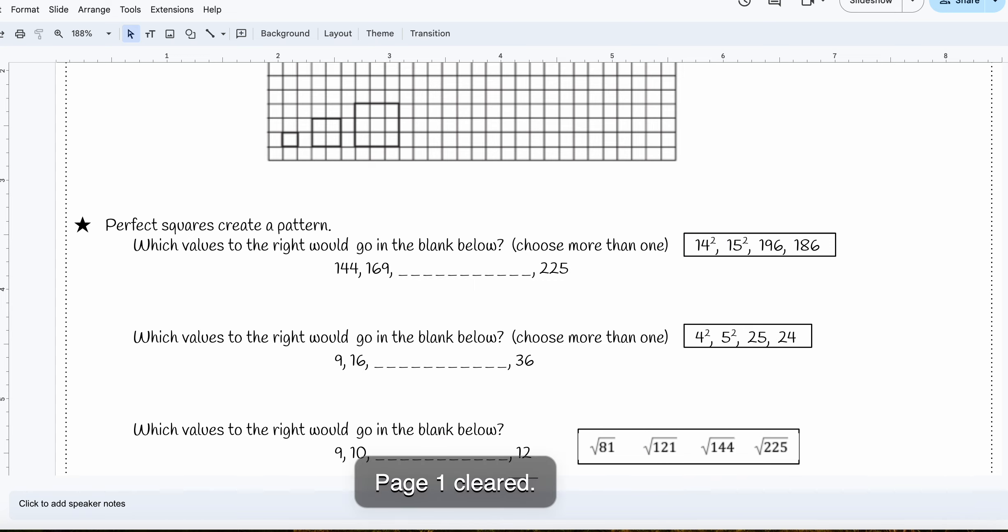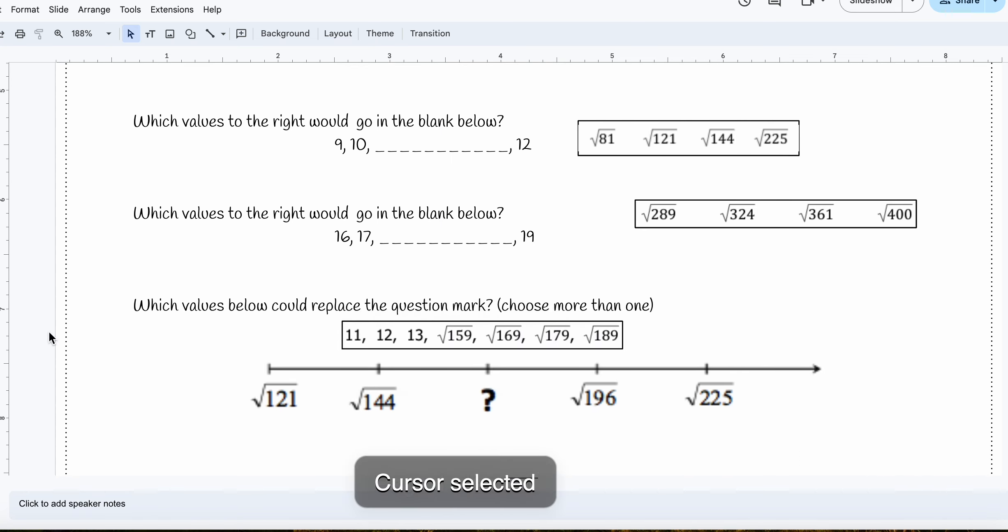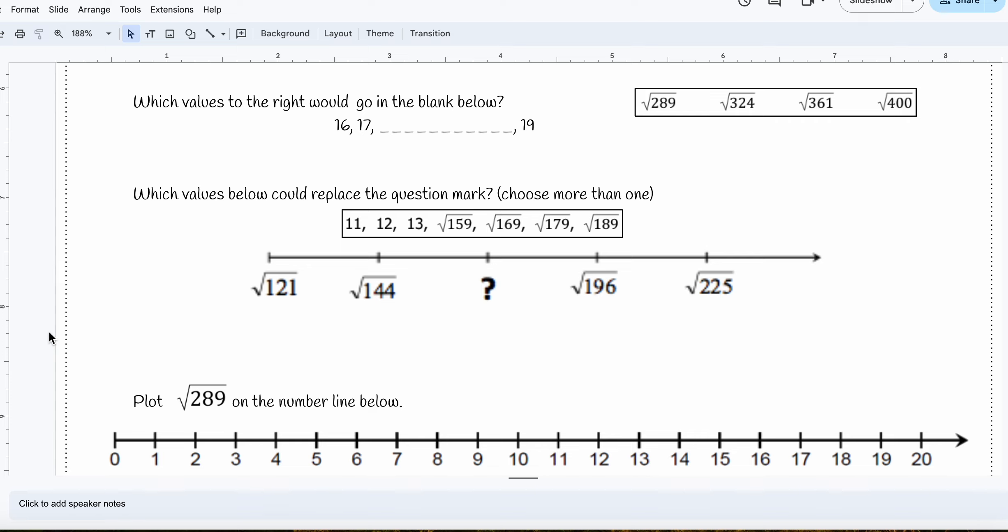All right, let's look at two more examples. Well, three more examples. Which values to the right would go in the blank? So it says 16, 17, 18. So I want to know the square root of which of these numbers equals 18.